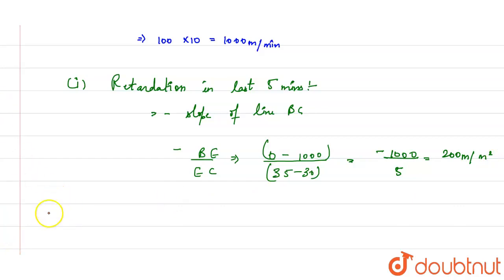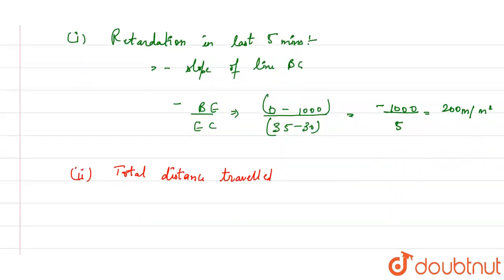Second, we will find total distance traveled. Total distance traveled - and how will we find the total distance? We will find area of trapezium OABC.